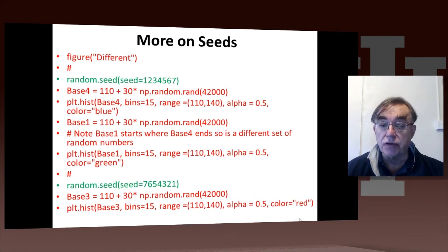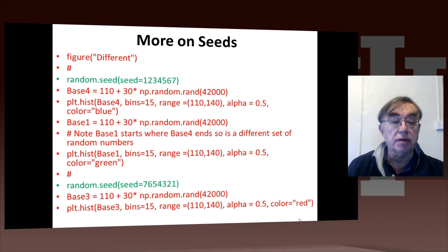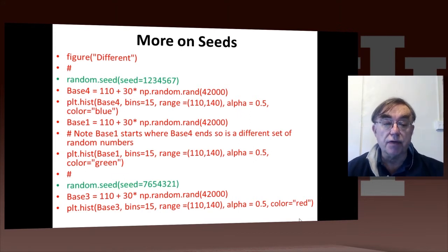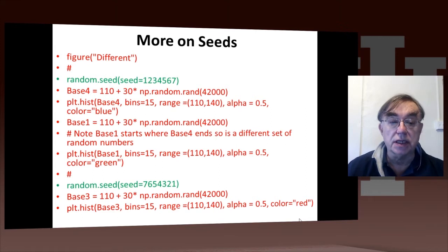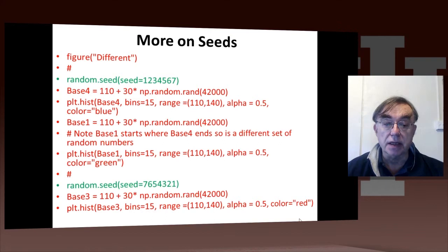Base1 just leaves off where base4 finishes, so it's actually related to base4. But if we have a decent generator, there is no correlation between one random number and the next, and so base4 and base1 should be fine and should be different. As an alternative way of getting a different answer, we just set a different seed. So base3 corresponds to the seed 7654321, different from that for base4 and different from that for base1. We don't actually know what the seed is for base1; it's just whatever the random number was at the end of the base4 calls.